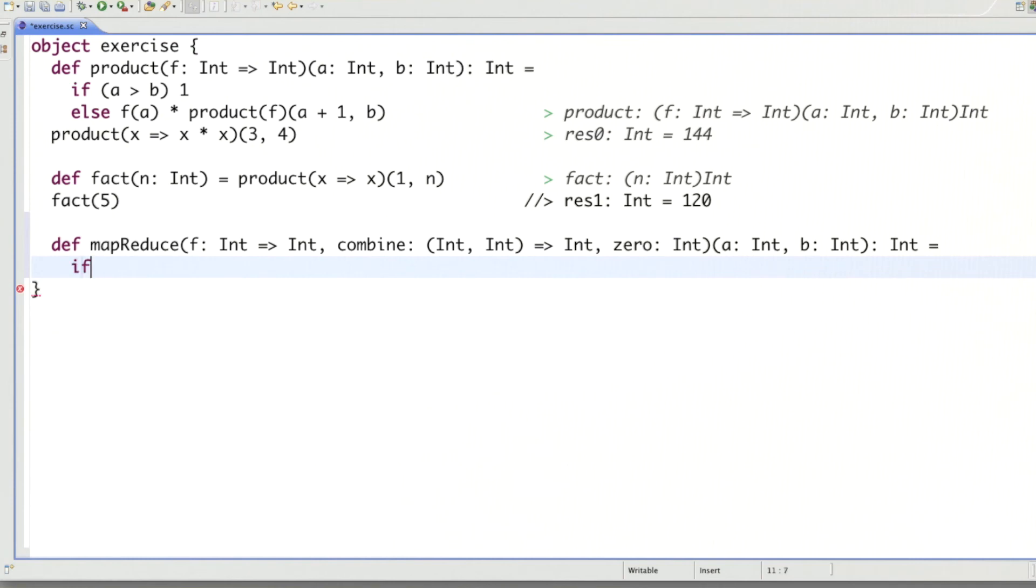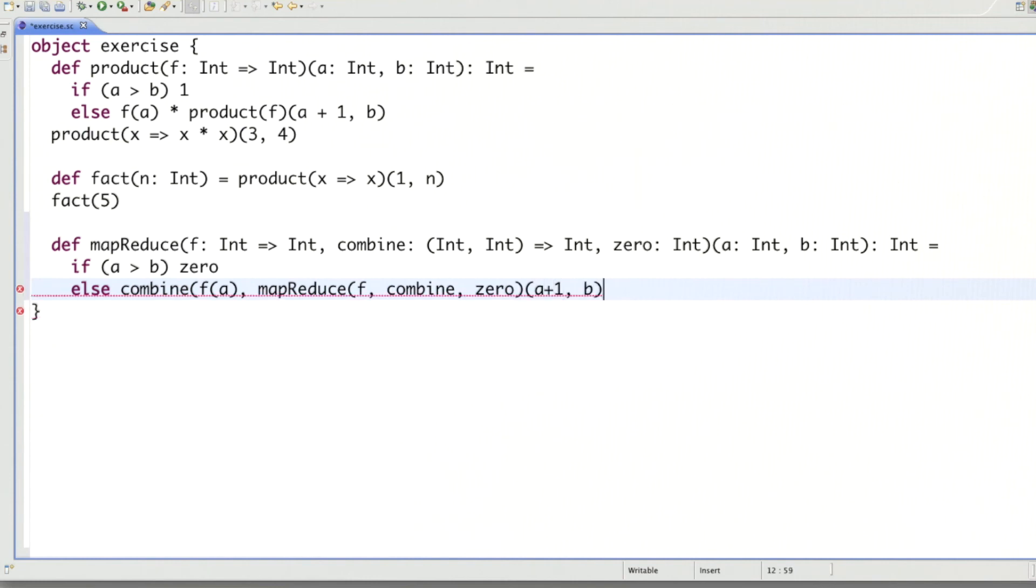How would we define it? Well, let's take the definition of product as a template. So if a is greater than b, then what do we return? The zero value. Otherwise, we take f of a. And what do we do with f of a? Well, neither summing nor multiplying, but we now combine it with the map reduce value of the same three parameters that we had initially. And a plus one and b. And it seems I'm missing a parent here. Good. So that was the map reduce example.